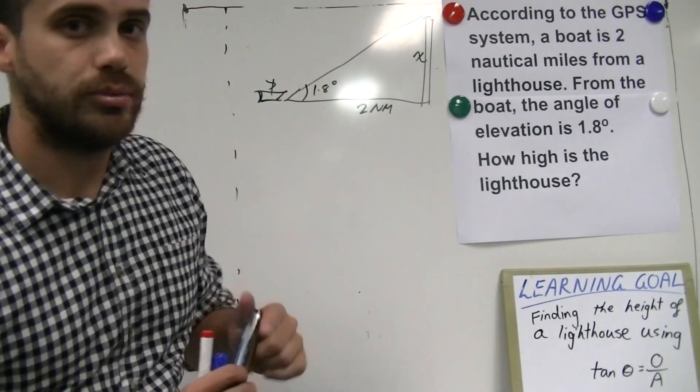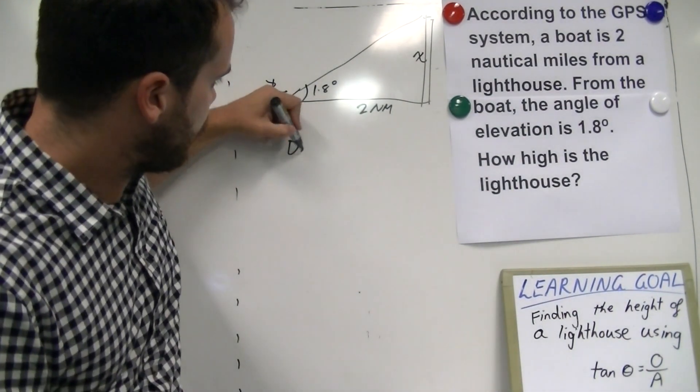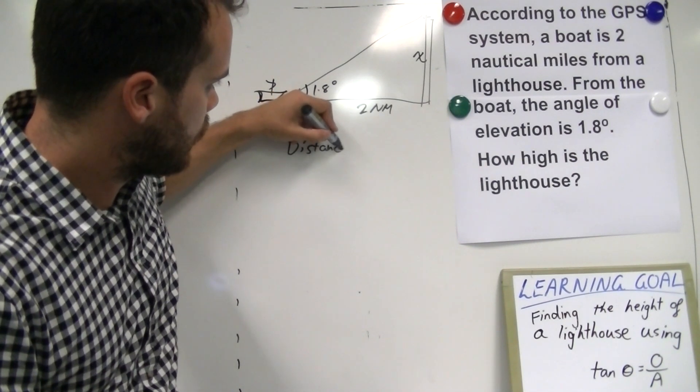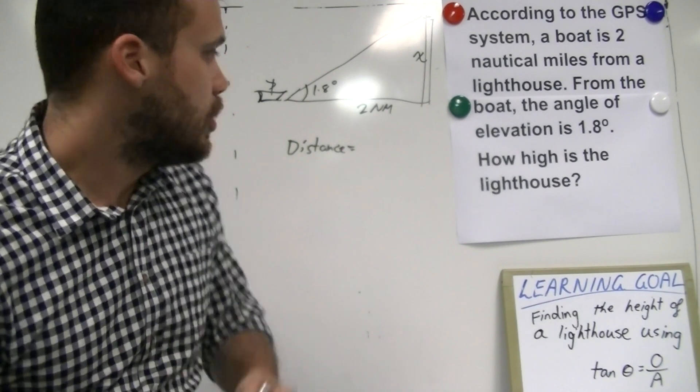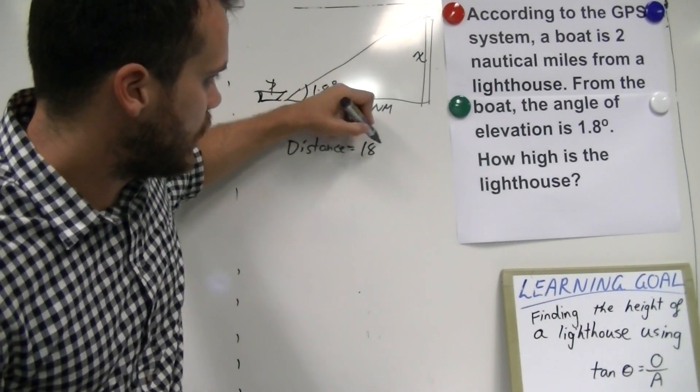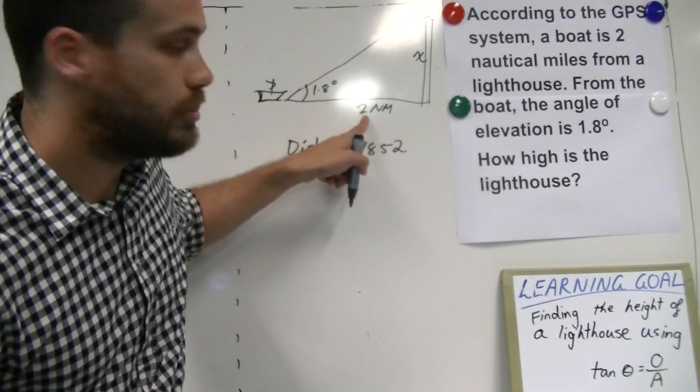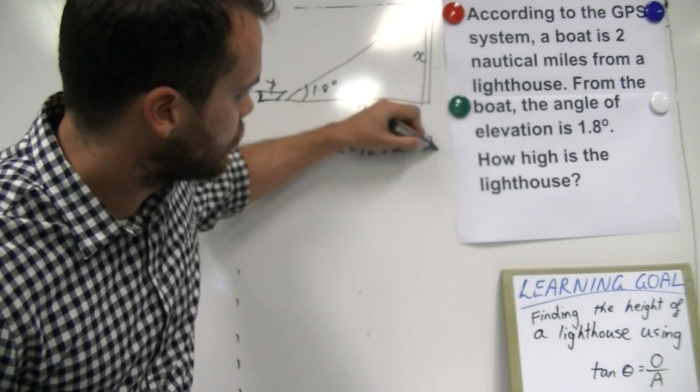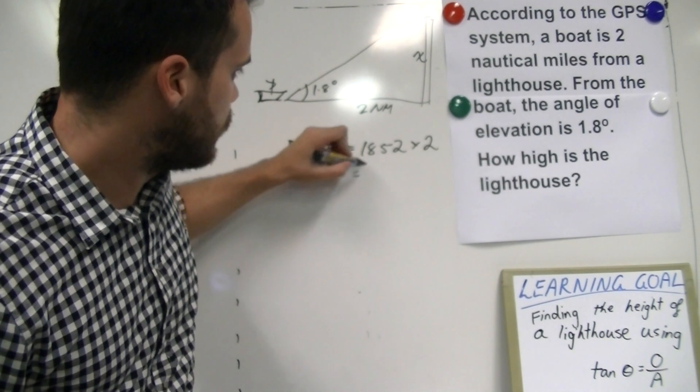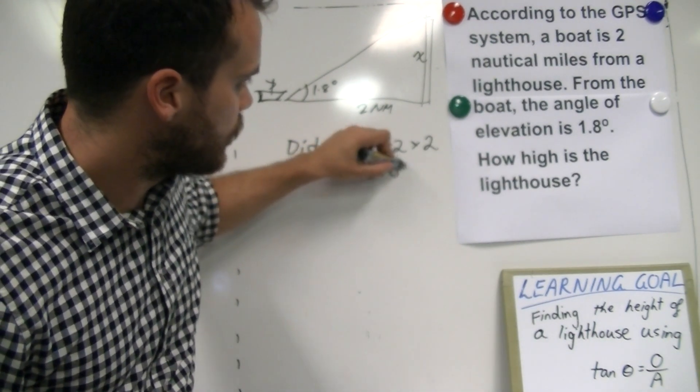So, 2 nautical miles. In order to figure out that distance, you're going to need to multiply that by our conversion factor which is 1852. So, multiply that by 1852. And you'll get 3,704.